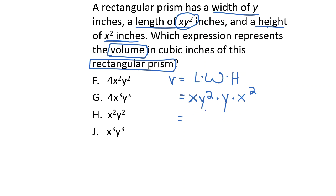We can also change the order of multiplication. So we multiply x times x squared first: x to the first times x squared is x to the 1 plus 2, which is x to the third. Then y squared times y to the first gives us y to the 2 plus 1, or y to the third. Looking at our answer choices, we need x to the third y to the third, and answer choice J fits.